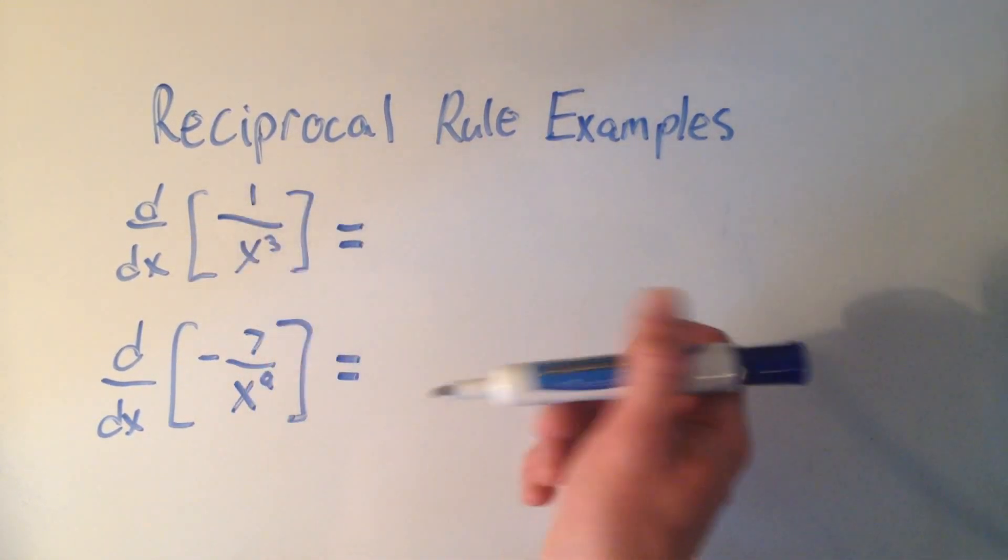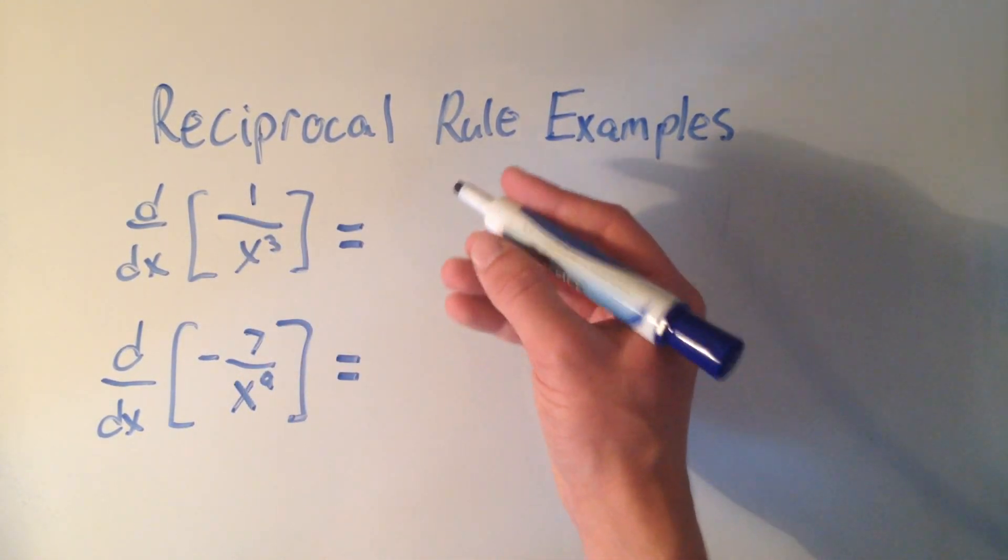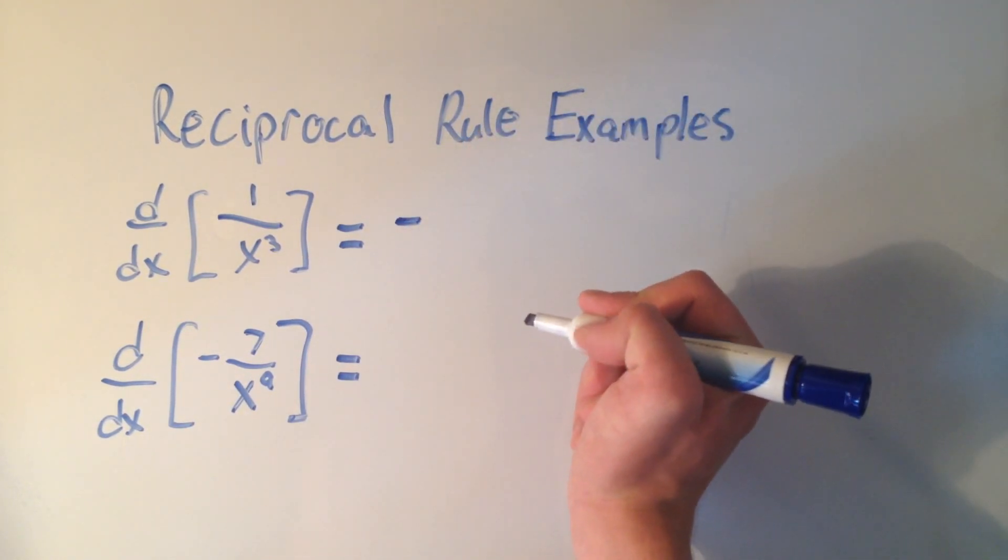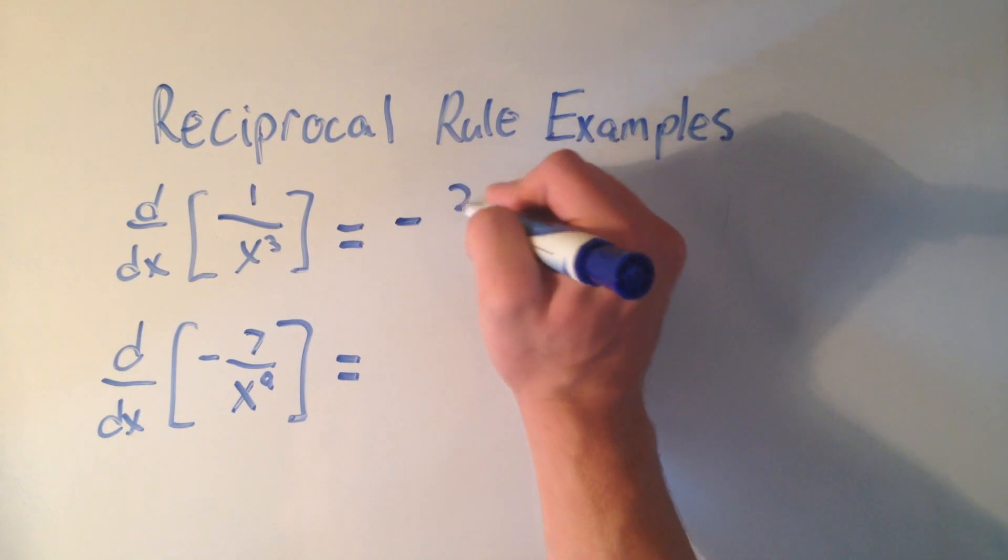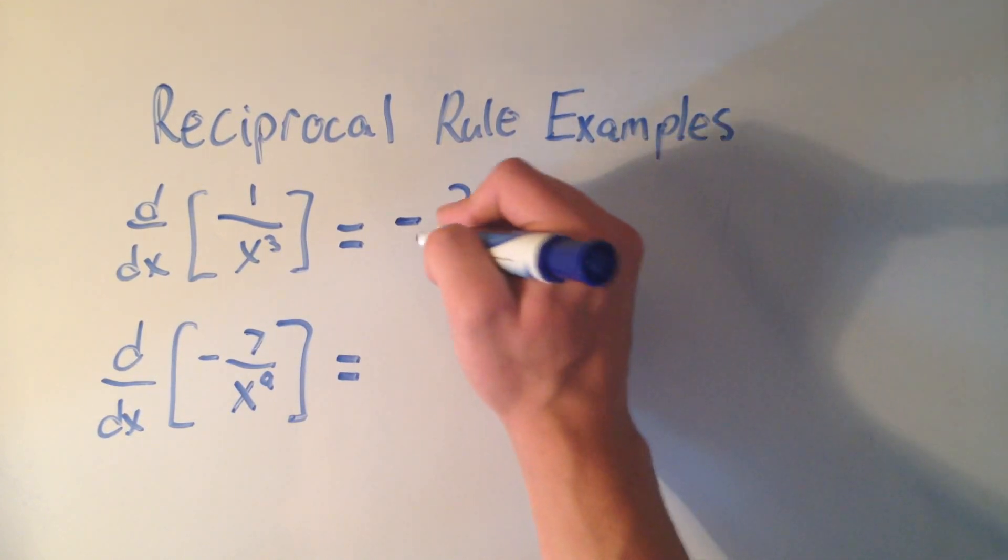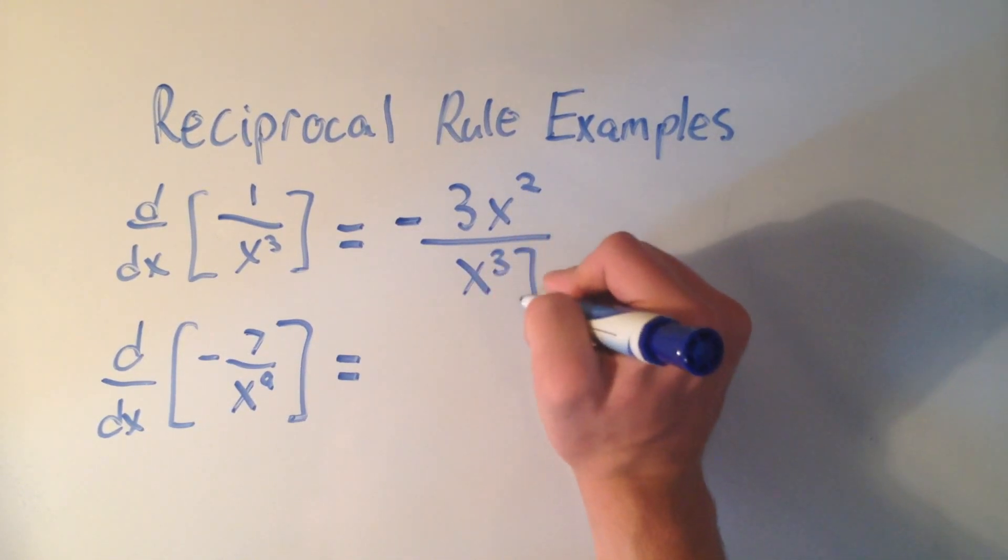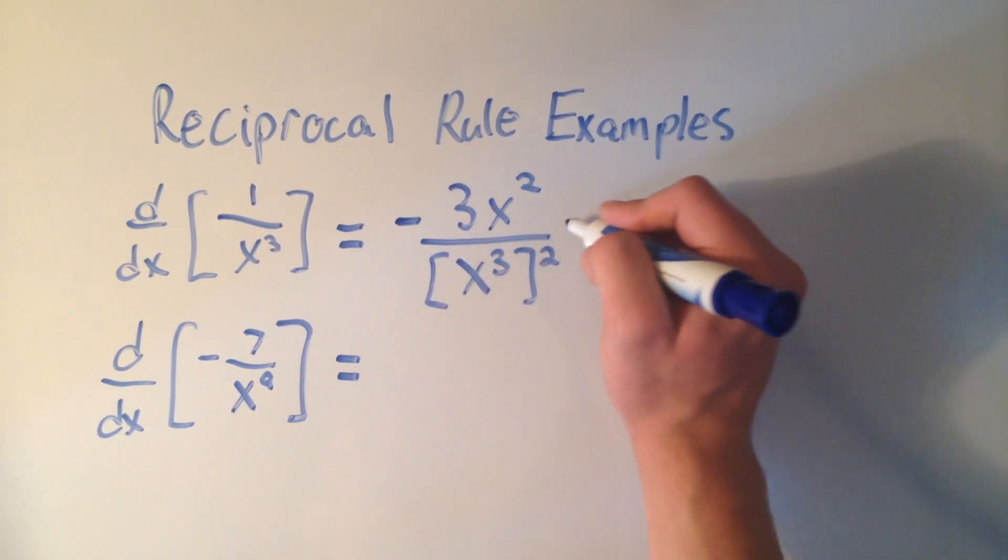So if I do that with 1 over x cubed, the derivative of that using the reciprocal rule says I put a minus, I put the derivative of x cubed on top, that's 3x squared, and then I write the denominator exactly as it was, and I square that.